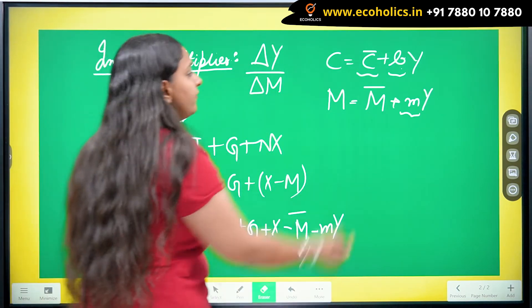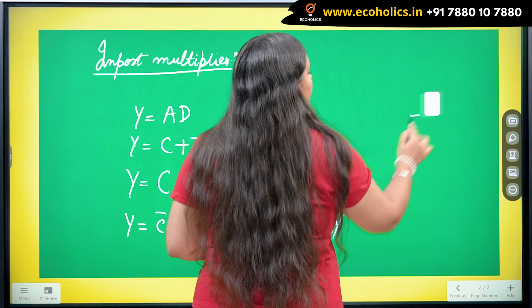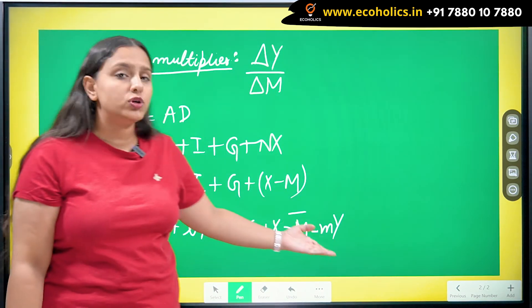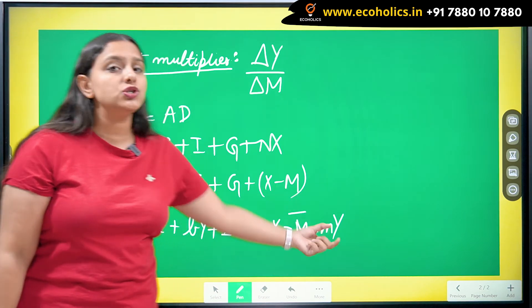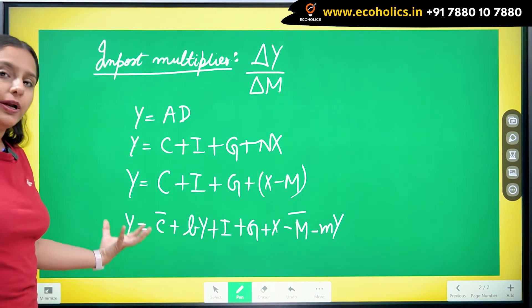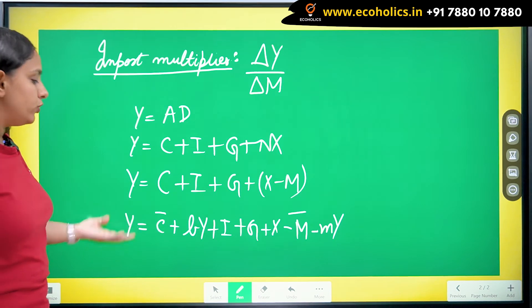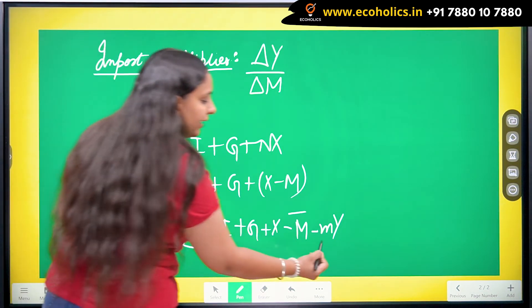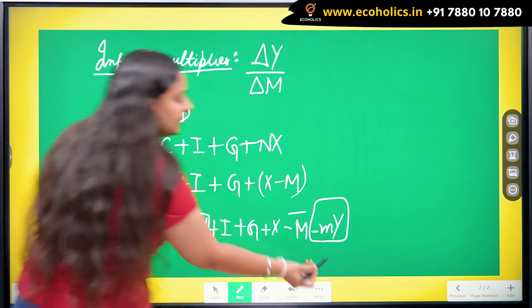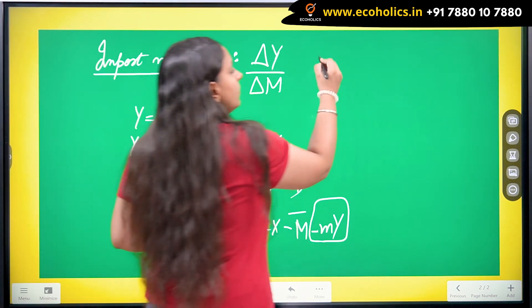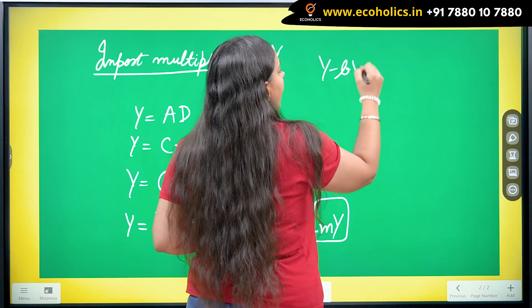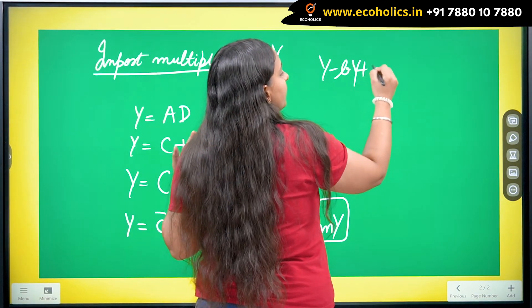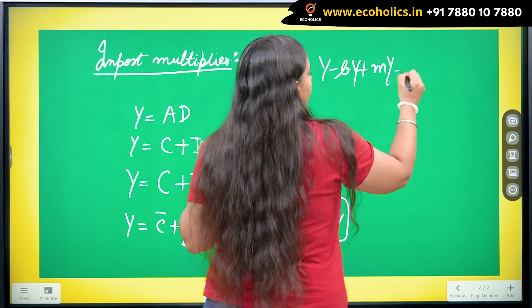Now, to get any kind of multiplier, I am saying only if the imports are going to change, this M is going to change, what effect it is going to create on Y. What I am going to do is I will collect my terms of Y on the left hand side. If I take these terms to the other side, I would be getting Y minus B Y, and we will have addition M Y.